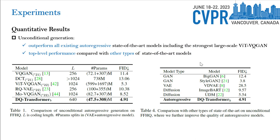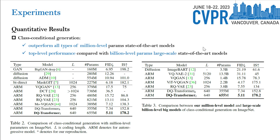For unconditional generation, we outperform all existing autoregressive state-of-the-art models, including the strongest large-scale VQGAN. We also achieve top-level performance compared with other types of state-of-the-art models. For class conditional generation, we outperform all types of million-level parameter state-of-the-art models, and also achieve top-level performance compared with billion-level parameter state-of-the-art models.